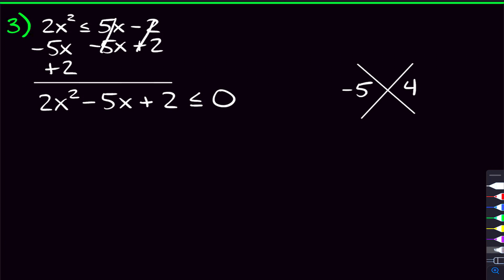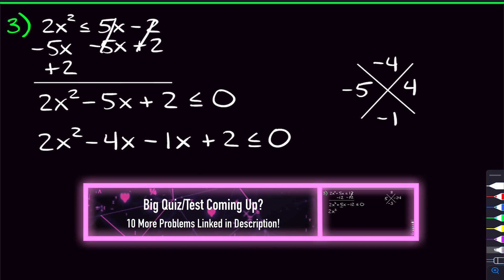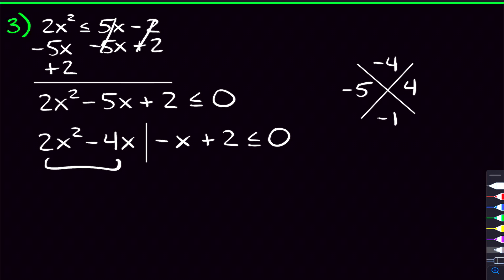So what two numbers add to be negative five and multiply to be four? How about negative four and negative one? Those numbers are going to be how we break up the negative five x. So we write: 2x squared minus 4x minus 1x plus two is less than or equal to zero. Now I've divided up our two separate groups. In the first group, they're both multiples of two and both have an x, so we take out a 2x. Dividing 2x squared by 2x leaves x, and dividing negative 4x by 2x gives negative two.